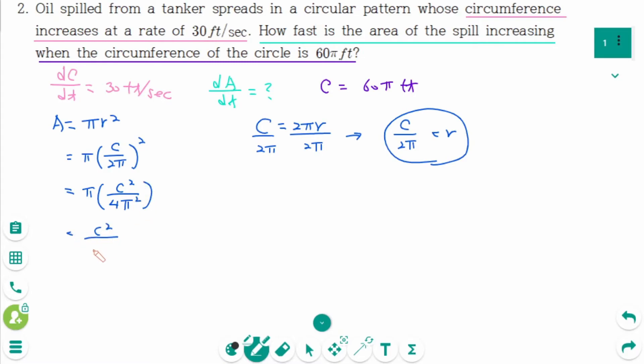Differentiate implicitly with respect to t: d/dt of A equals d/dt of C squared over 4 pi. Then dA/dt equals, using the chain rule, the derivative of C squared equals 2C times dC/dt, and keep the constant over 4 pi. Then simplifying, C over 2 pi times dC/dt.